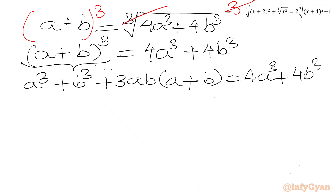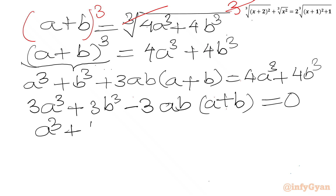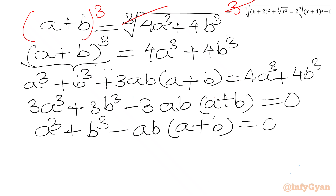Now we will take all terms to the RHS. So 4a³ minus a³ gives 3a³, and 4b³ minus b³ gives 3b³, and the whole term changes sign. So we write: 3a³ + 3b³ - 3ab(a + b) equal to 0. This equation is divisible by 3, so dividing through by 3 we get a³ + b³ - ab(a + b) equal to 0.